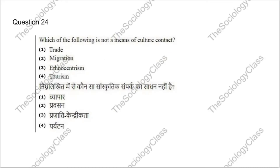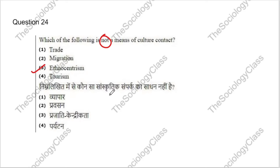Question 24: Which of the following is NOT a means of culture contact? Options: trade, migration, ethnocentrism, or tourism. The correct answer is C — ethnocentrism. Ethnocentrism is an ideology where you consider your own culture superior to another culture, not a means of culture contact.